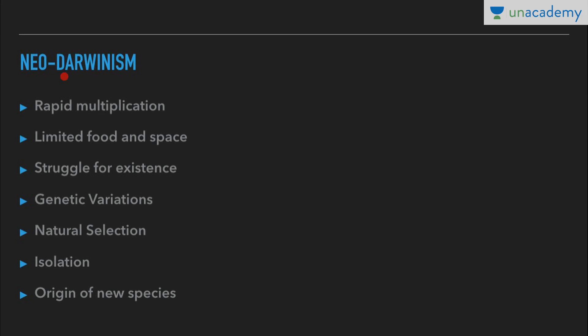Neo-Darwinism is a modified form of Darwinism incorporating recent research by scientists like Weismann, Mendel, and others. It has two key concepts: mutation and natural selection.